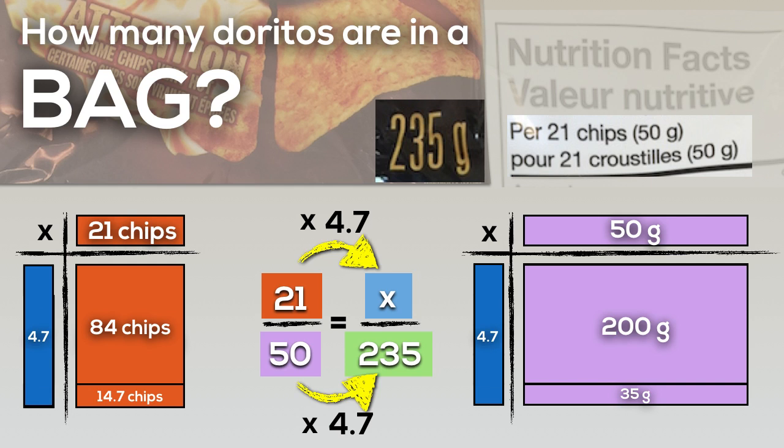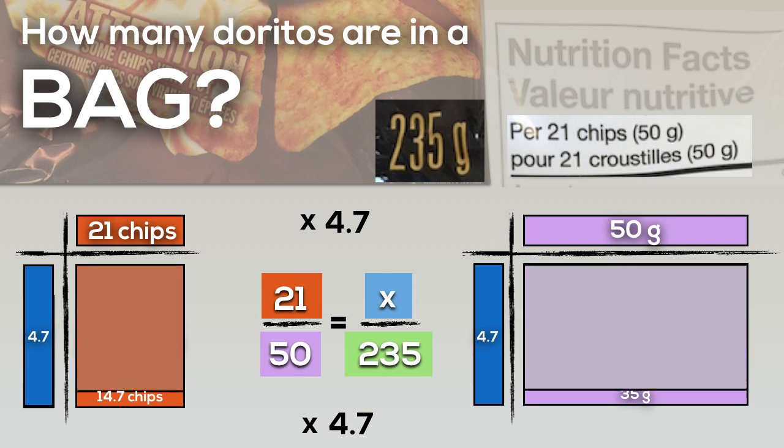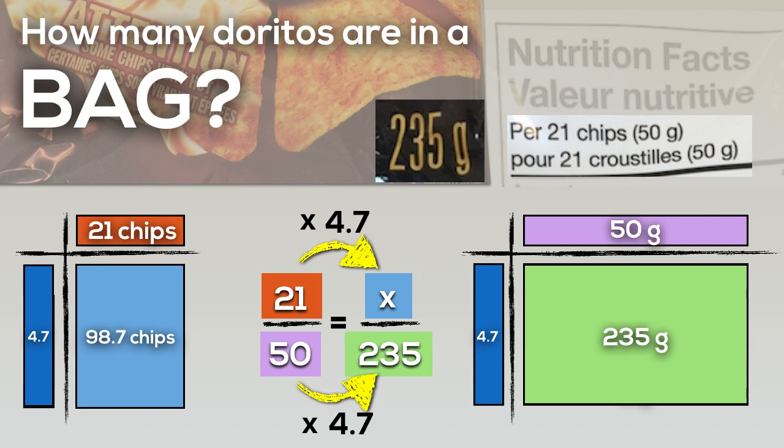If we put those amounts together, we end up with our multiplier, which is 4.7, and a total of 98.7 chips. Hopefully students will have a better understanding of how that proportion works.